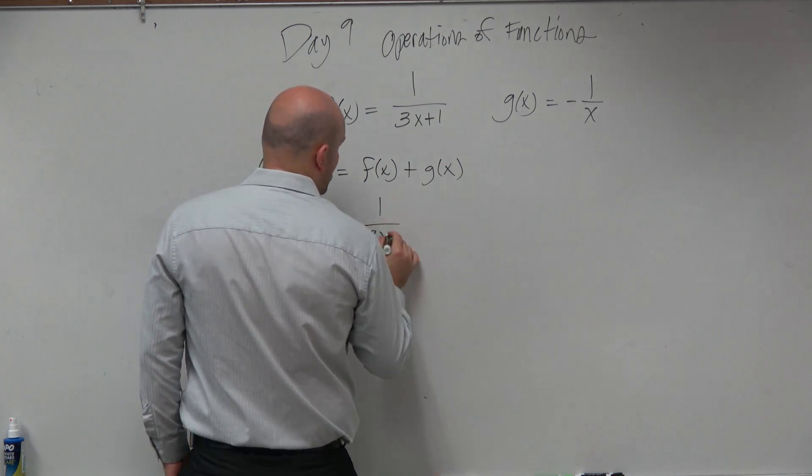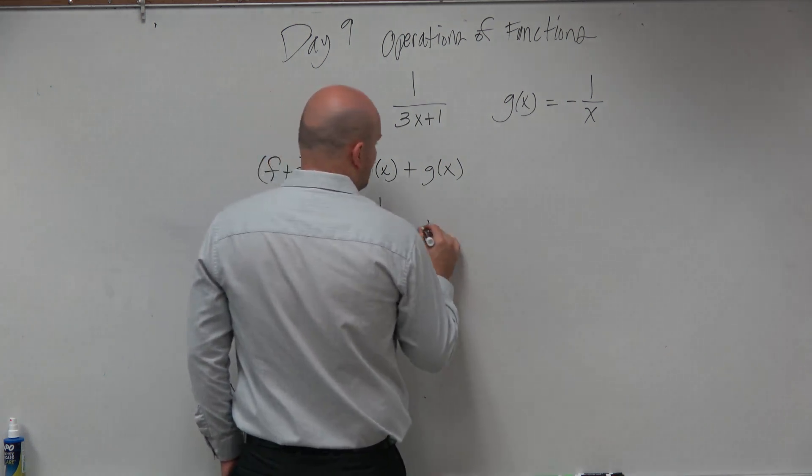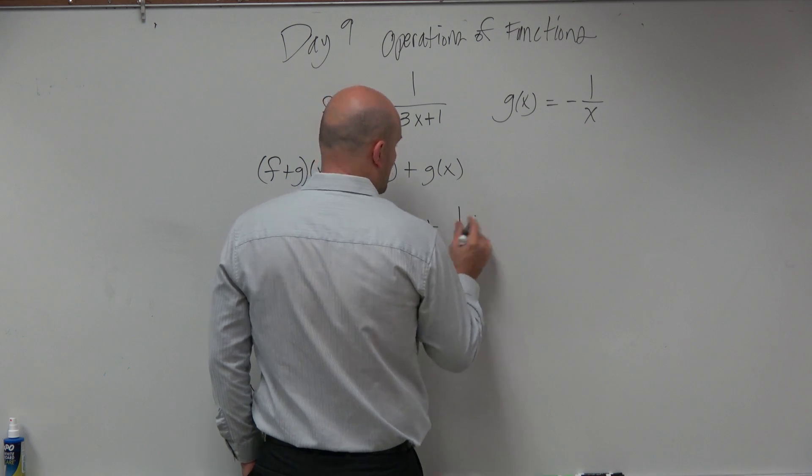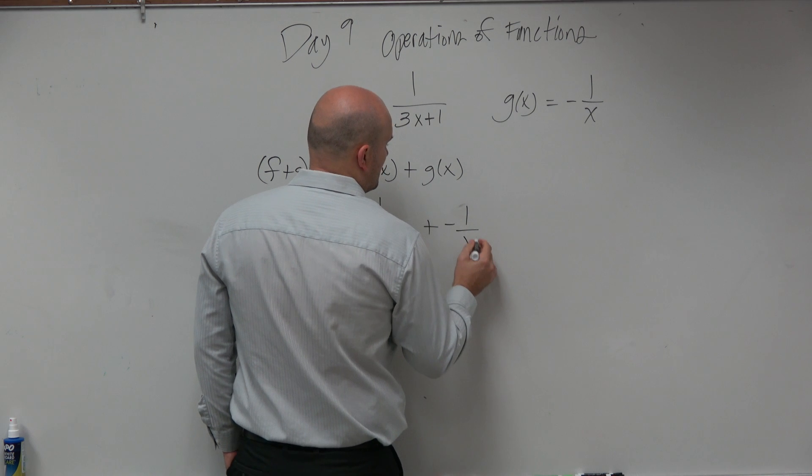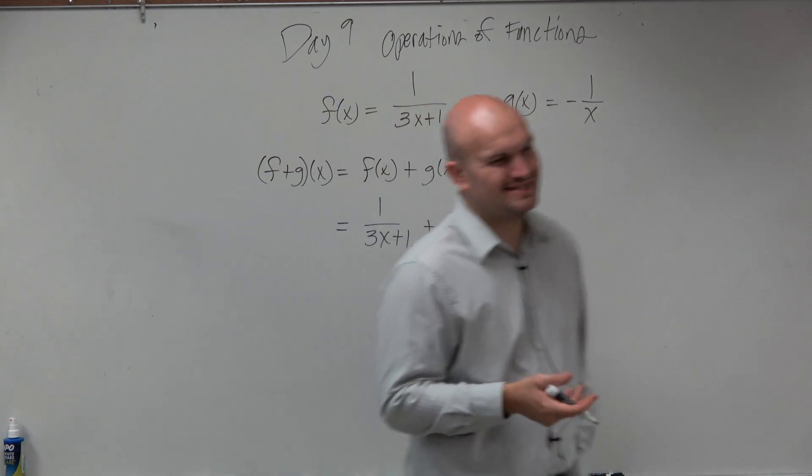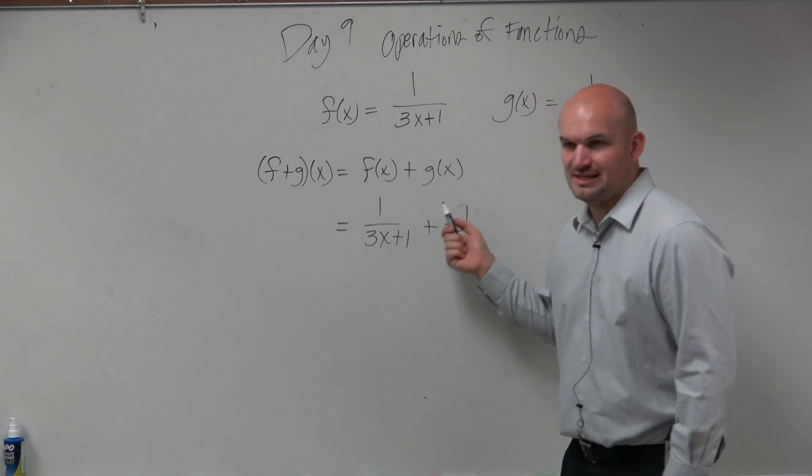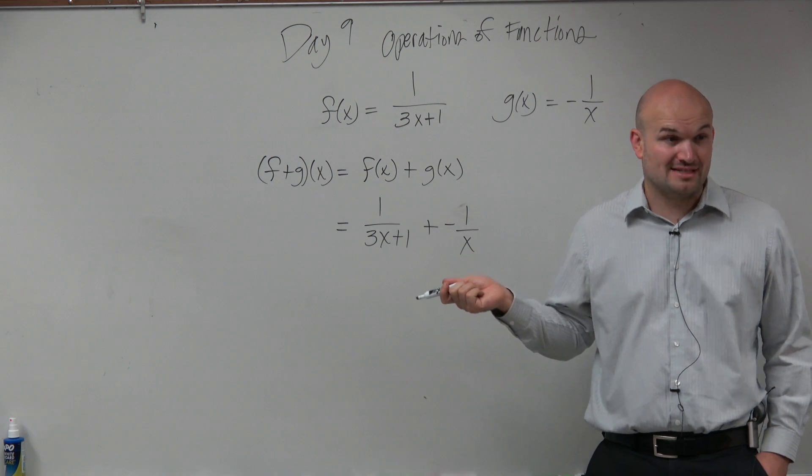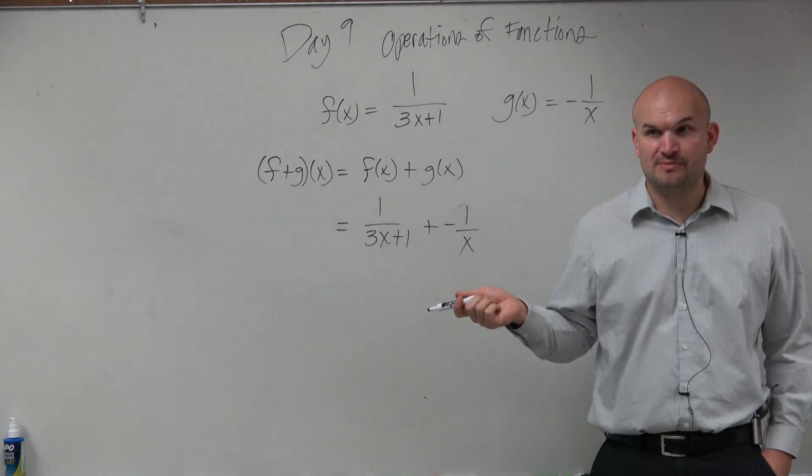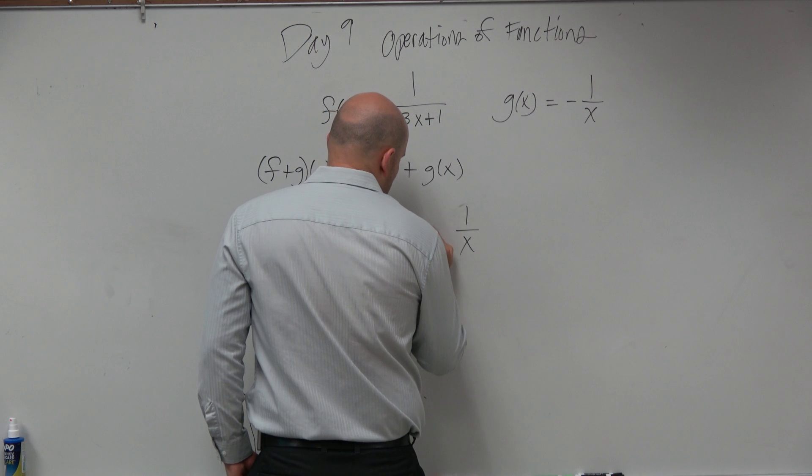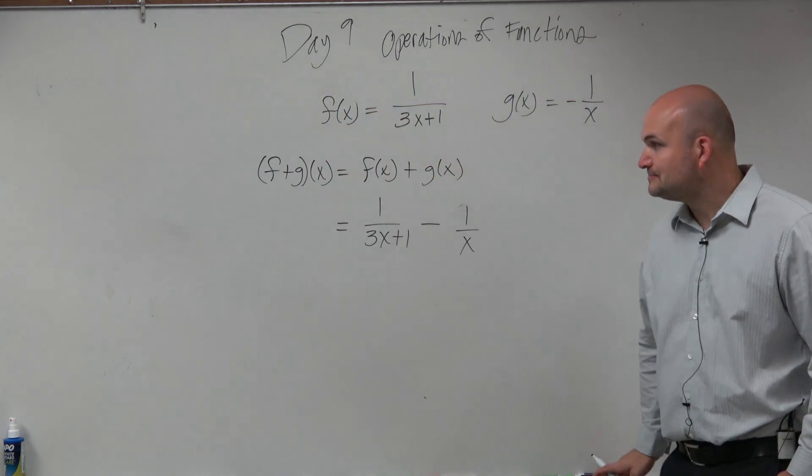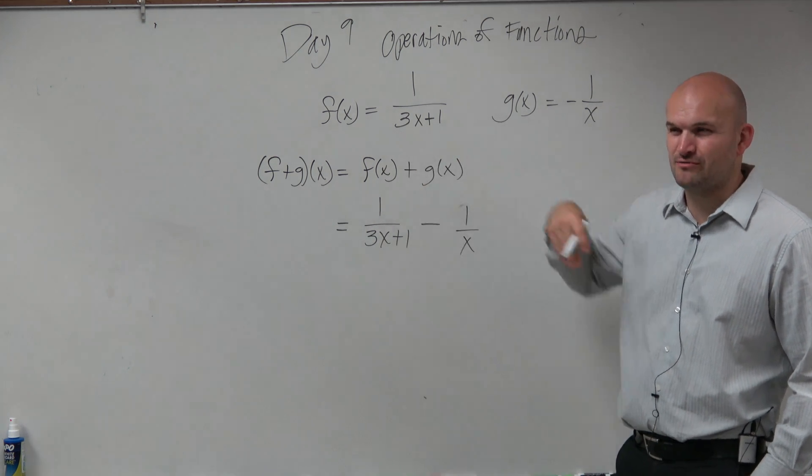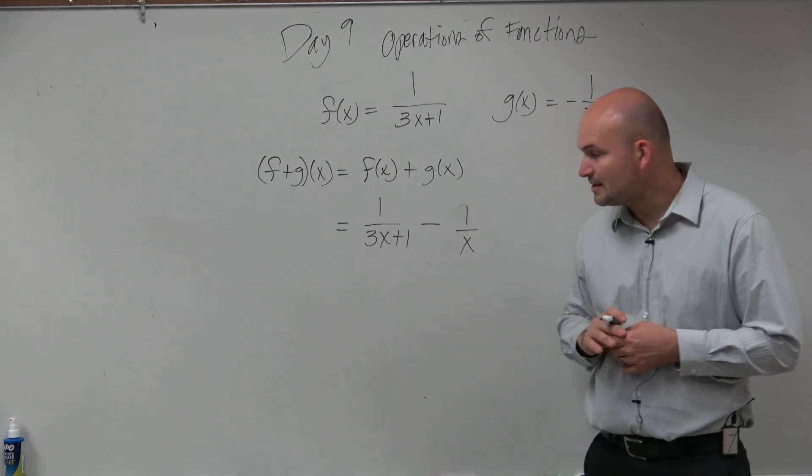So we have 1 over 3x plus 1 plus negative 1 over x. Now hopefully you can identify that plus a minus is really the same thing as subtracting, right? So let's just rewrite this as subtraction. Plus a negative is the same thing as subtraction. So even though this is an addition, we're actually rewriting it as a subtraction problem.